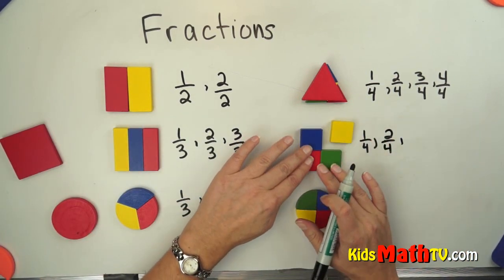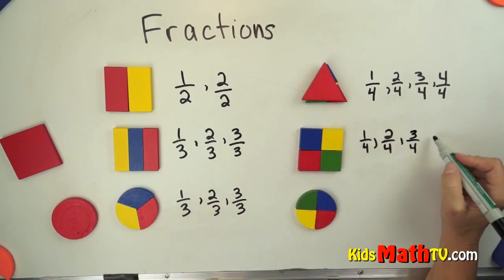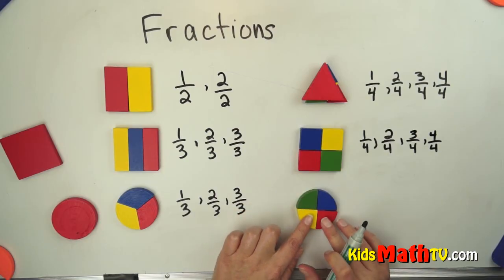We can have three out of four. Or the whole thing, which is four out of four. And the same thing with our circle.